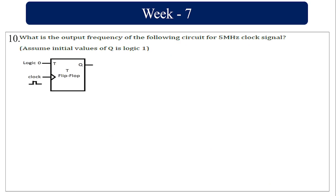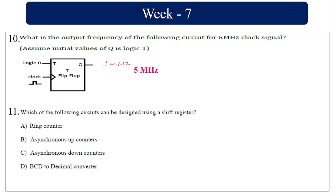What is the output frequency of the following sequence? Assume the initial value of Q is logic 1, which corresponds to 5 MHz. If logic is 0 the state will not change, so it remains 5 MHz. Which of the following can be designed as a shift register? It is going to be a ring counter.